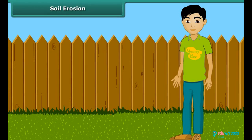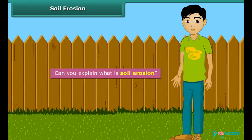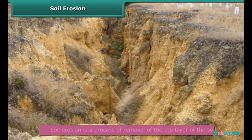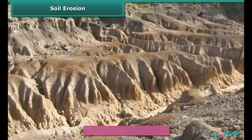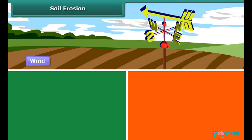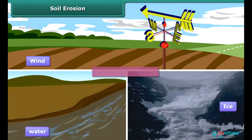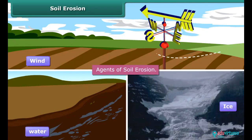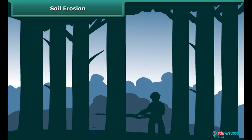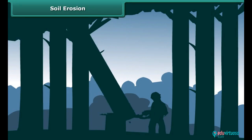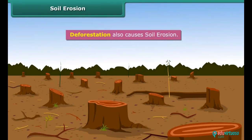Soil Erosion. Can you explain what is soil erosion? Well, soil erosion is a process of removal of the top layer of the soil. But what causes soil erosion? Basically it is caused by the action of wind, water and ice — these are the agents of soil erosion. Apart from natural agents, human activities like cutting down trees also cause soil erosion.